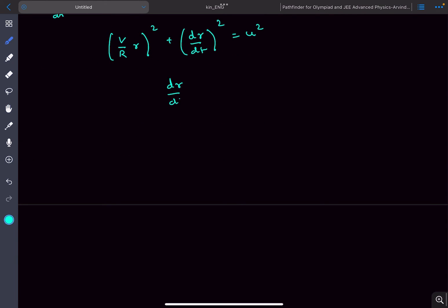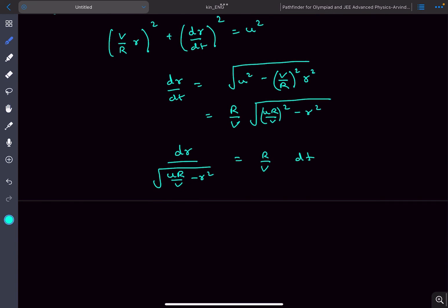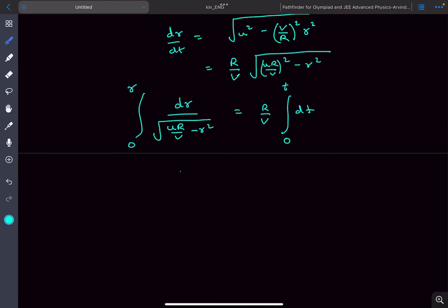So if we solve it we'll get dr/dt to be... we'll finally end up with this equation. Now we can integrate on both sides. So at t equal to 0, the particle was at the origin so the r value would be 0. And at t equal to some general time t, let's say this value is r.